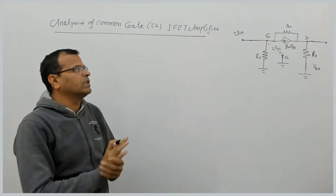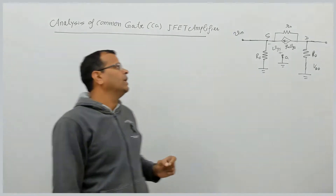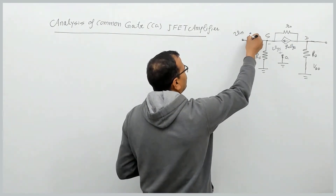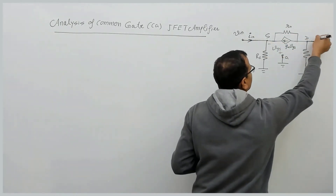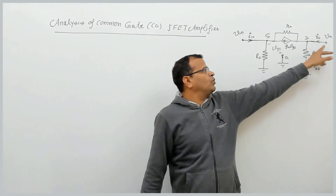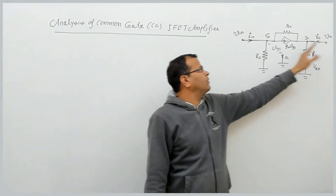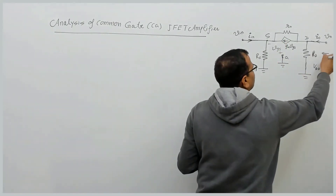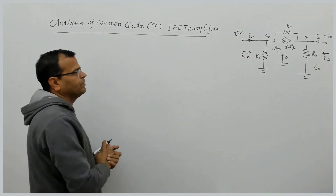Analysis means finding the input resistance, output resistance, and voltage gain. To find input resistance, we find the relationship between v_in and i_in. For output resistance, we find the relationship between v_naught and i_naught, with the input signal assumed open circuit and i_naught assumed zero when the output terminal is open circuited. Input resistance is seen from the input side and output resistance from the output side.